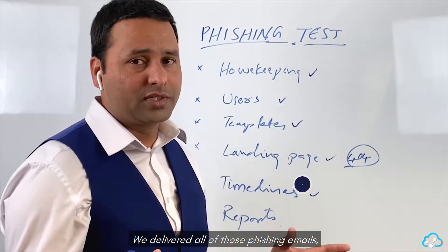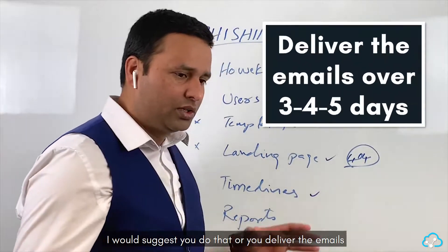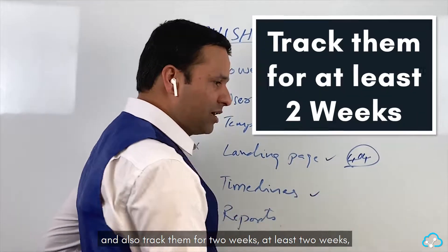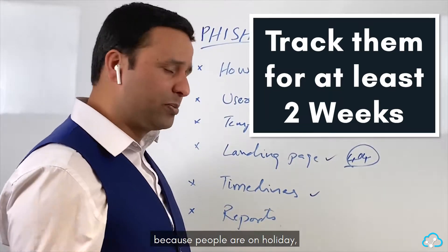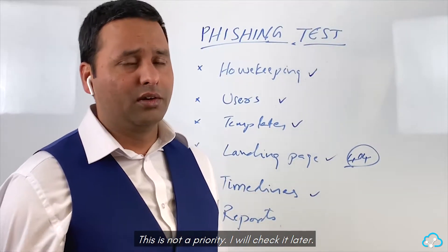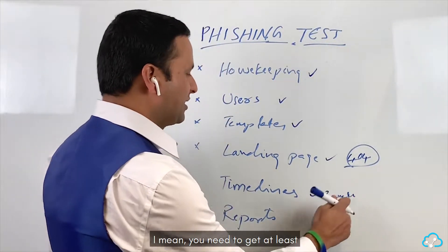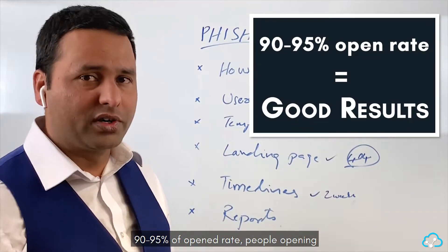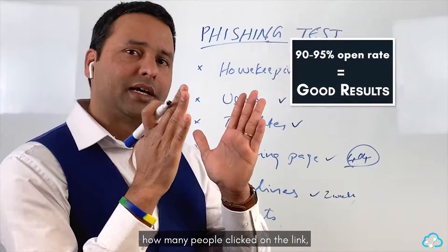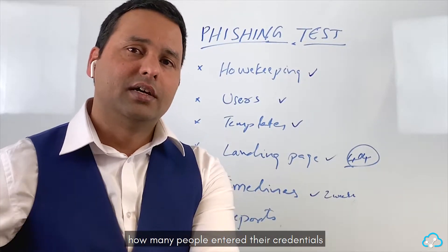For timelines, many people deliver all the phishing test emails in a single day — I would not do that. Deliver the emails over three, four, or five days depending on how many users you have. Also track them for at least two weeks, because people are on holiday, away from work, or not checking emails. You need to get at least a 90–95% open rate to get good results.